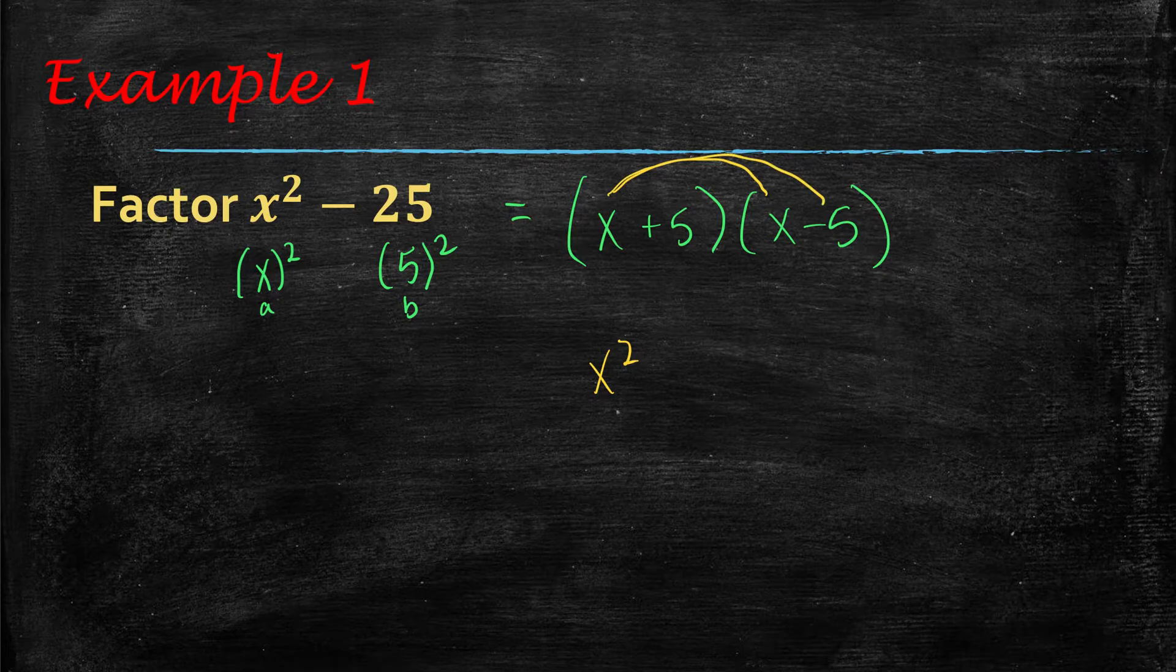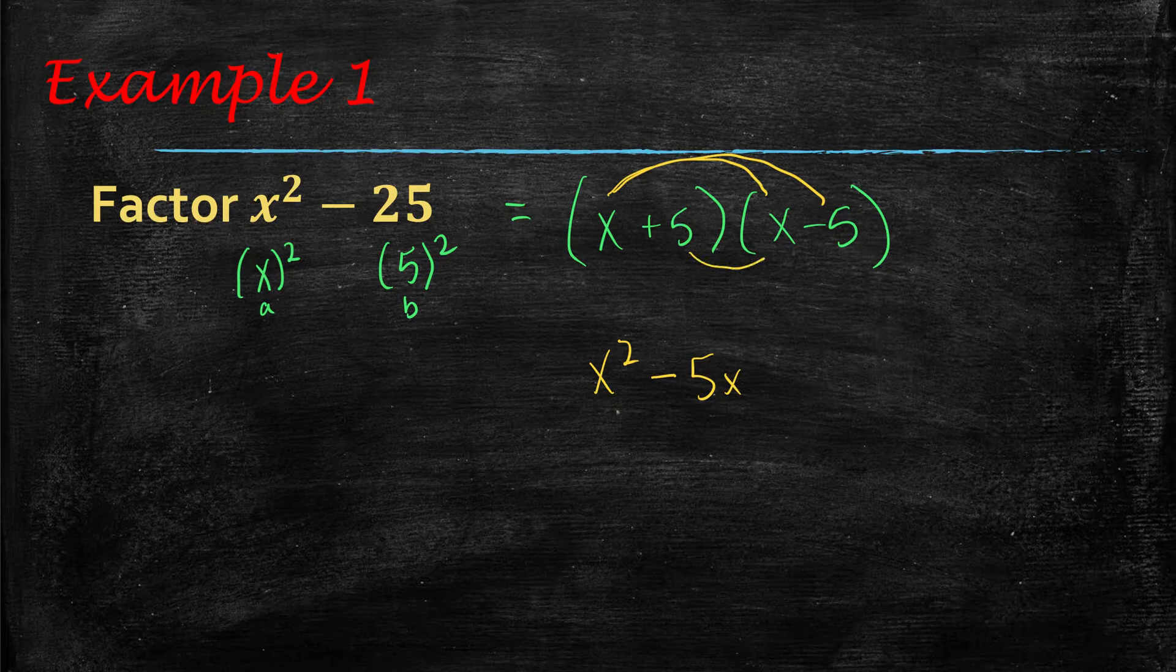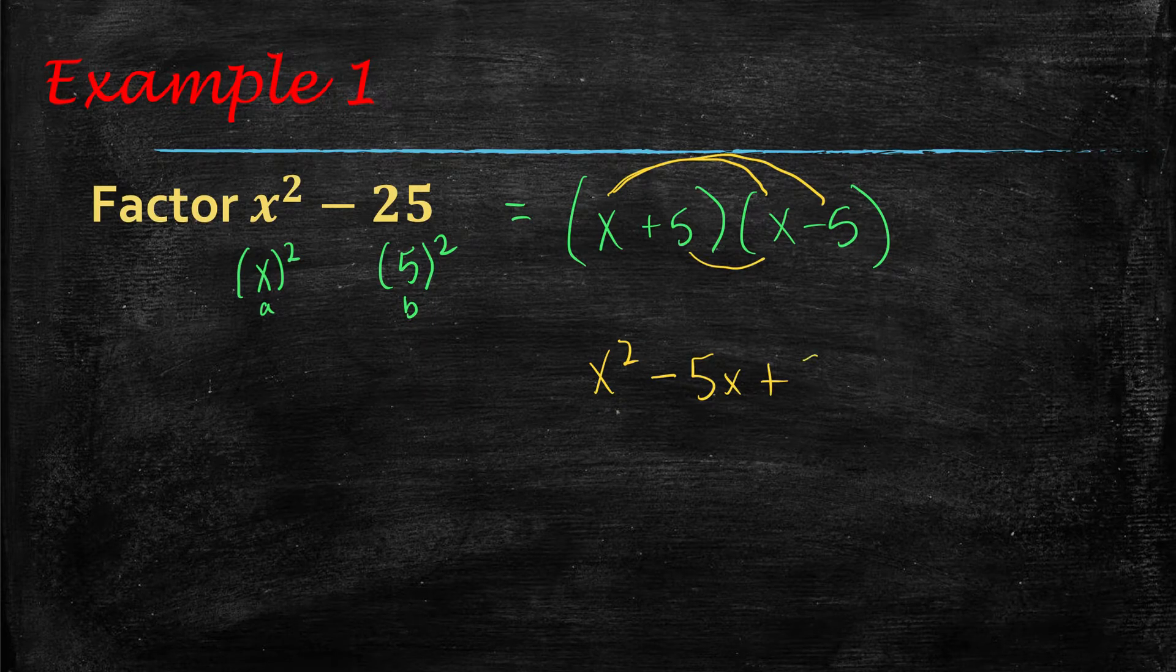then you'd have x times a negative 5, which is minus 5x, and then you'd have 5 times x, which is plus 5x,